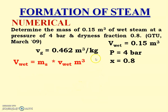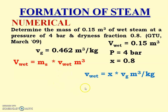The equation is: total volume = mass × specific volume of wet steam. We know the total volume (0.15 m³) and need the specific volume of wet steam. Specific volume of wet steam v_wet = x × vg = 0.8 × vg from steam table.